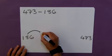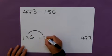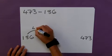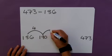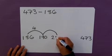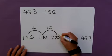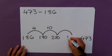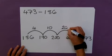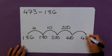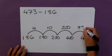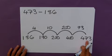The first one I would do on this example, for me personally, 190 seems a logical jump. A jump of 4. I'd then jump another 10 to get me to 200. A further 200 to get me to 400. And then finally a jump of 73 to get me to my 473.